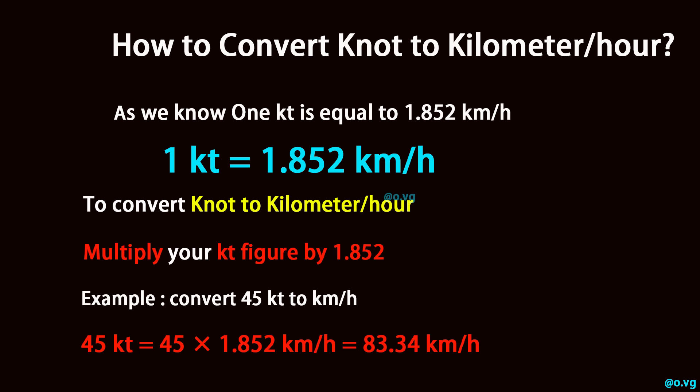Convert 45 knots to Kilometers Per Hour. 45 knots is equal to 45 times 1.852 kilometers per hour, which equals 83.34 kilometers per hour.